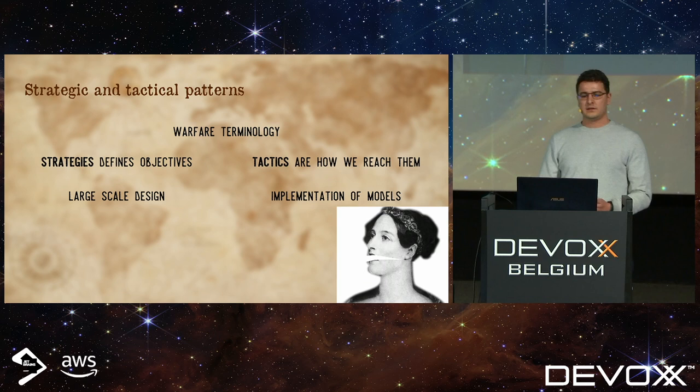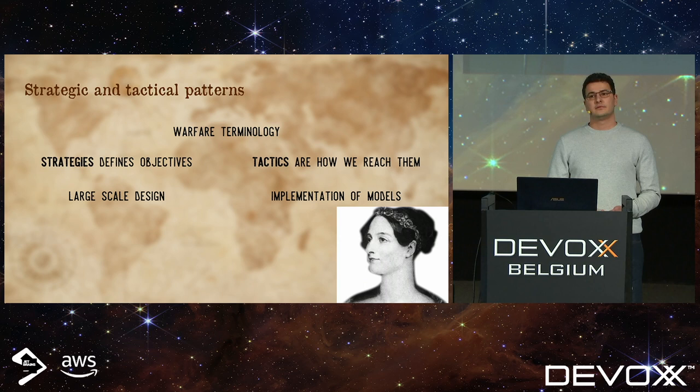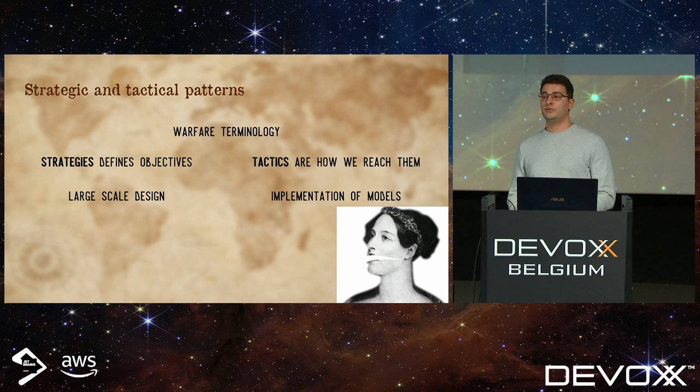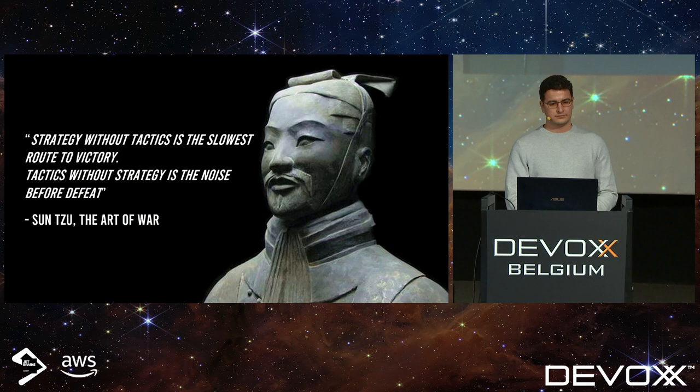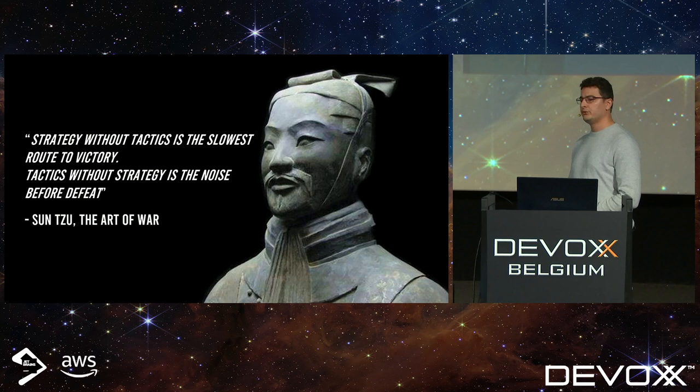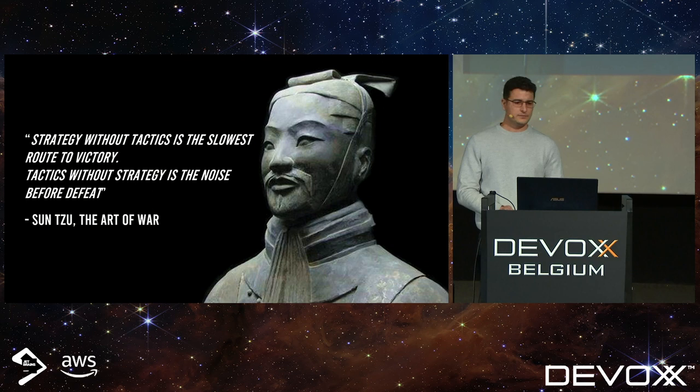Usually when we get into domain driven design, we start with the tactical patterns — because we come to DDD because we have pains in the code, so we look for code solutions. Sun Tzu says in The Art of War: strategy without tactics is the slowest route to victory; tactics without strategy is the noise before defeat. I'm quoting Sun Tzu because this type of quote works extremely well to convince your manager and C-level executives to let you do large-scale design.